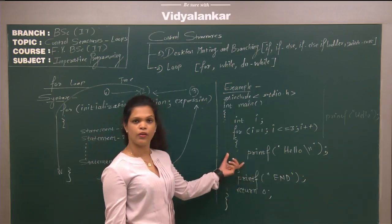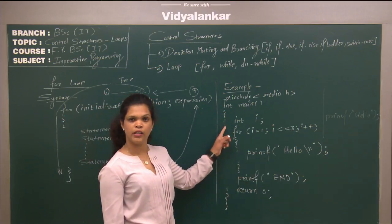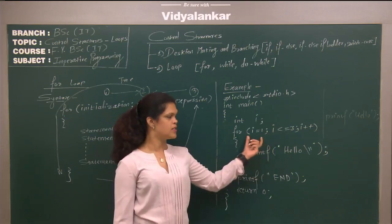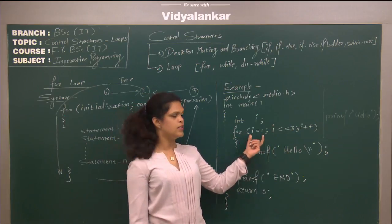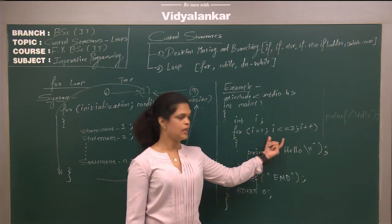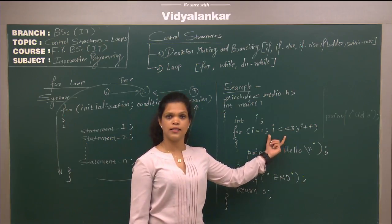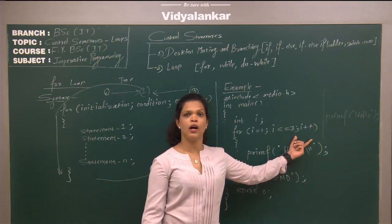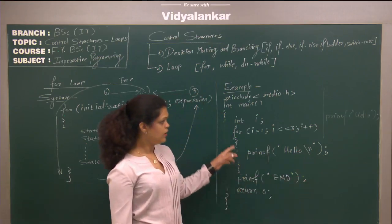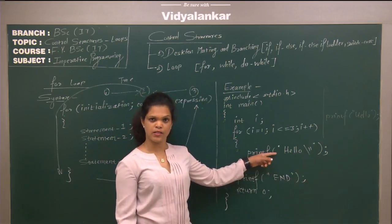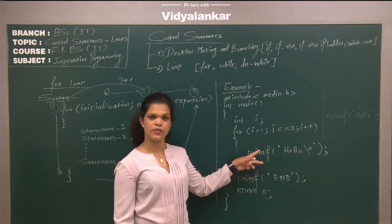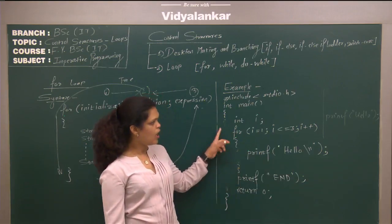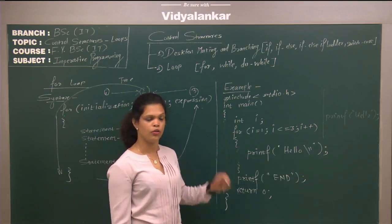Now we will see an example of for loop. In this program, we have one variable i of type integer, and then we have written a for loop with three parts. The first is the initialization of the variable, that is i equals one. Second is the condition, that is i is less than or equals to three. And third is the expression, i++, which will increment the value of i by one. We want to display the message hello three times, and that's what we have written inside the for loop.